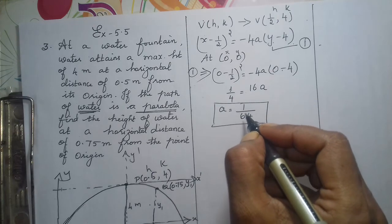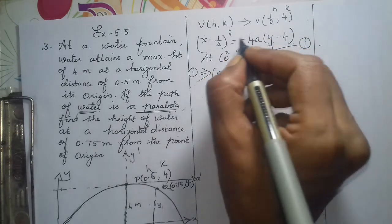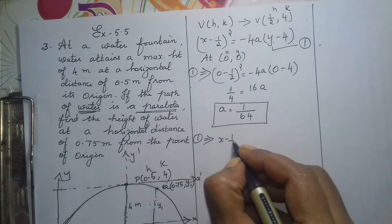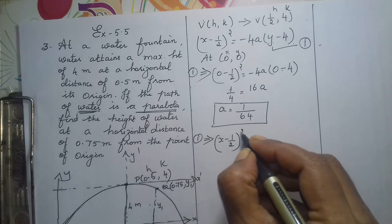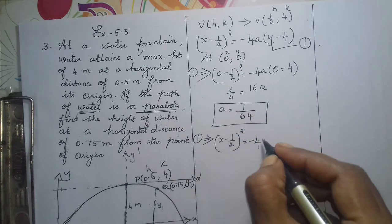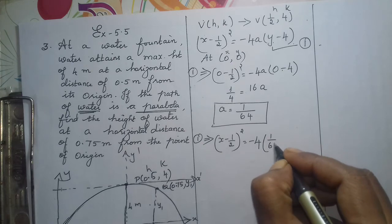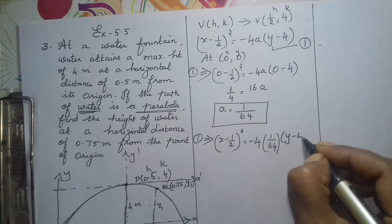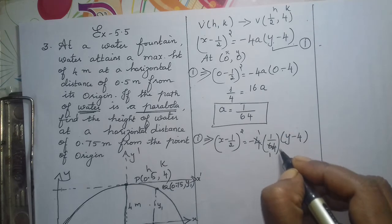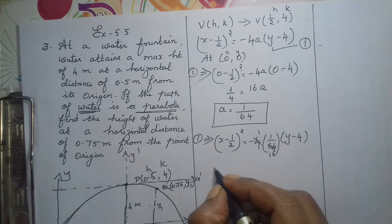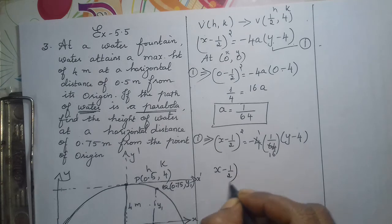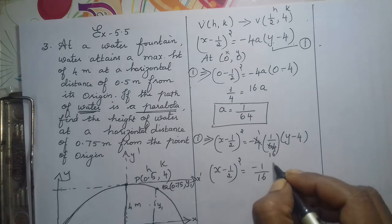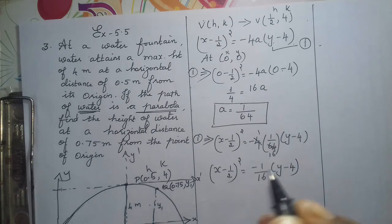Substitute the value of a = 1/64 in equation 1. Therefore equation 1 implies: (x − 1/2)² = −4 × (1/64) × (y − 4). Cancel — 4 × 16 = 64, giving 1/16. Therefore we have (x − 1/2)² = −(1/16)(y − 4).